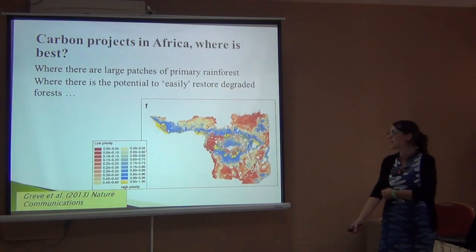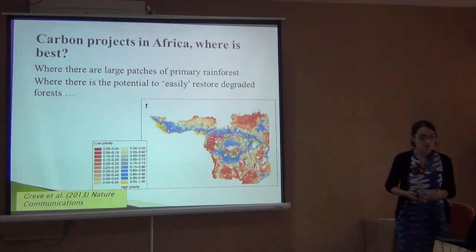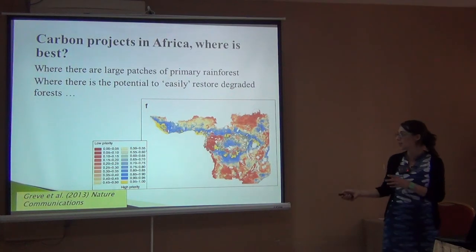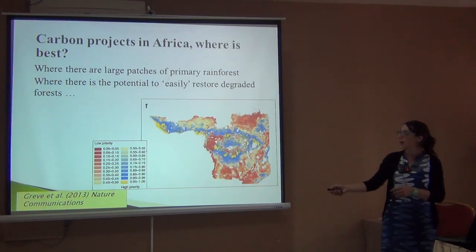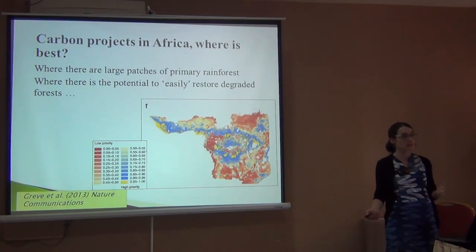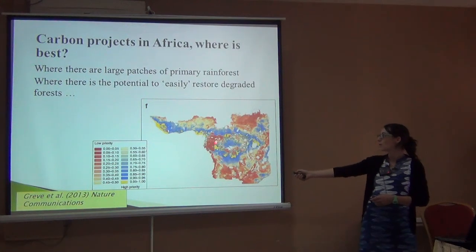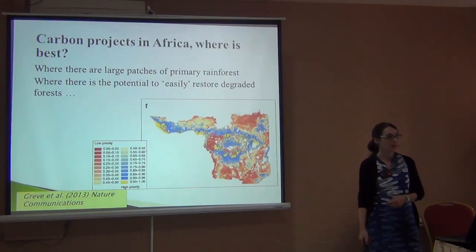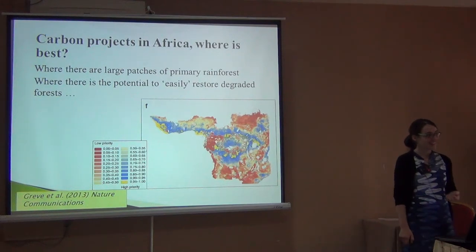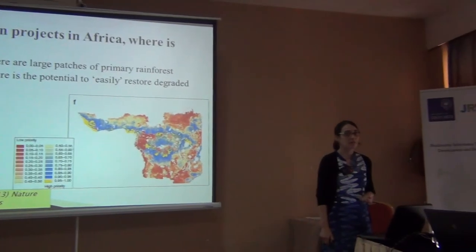So where are the best places to do carbon projects in Africa? I really like this map. Can somebody spot something strange about it? In general, red is not the best place — blue and yellow is much better. Most of the forest zone is either suited for avoiding deforestation or, because of nice rainfall allowing fast tree growth, for reforestation. My question is: why is Gabon listed as no priority if it has big forests?